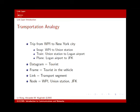Here's an analogy. Consider a trip from WPI to New York City. You take SNAP to Union Station, then a bus from Union Station to Logan Airport, and then a plane from Logan Airport to JFK — though that's a bit roundabout. Or more directly, you take the bus from Union Station to Port Authority in Manhattan.